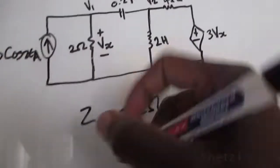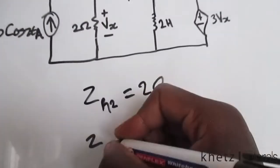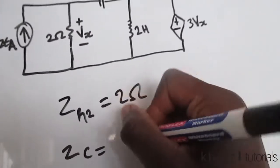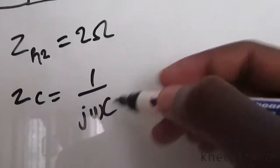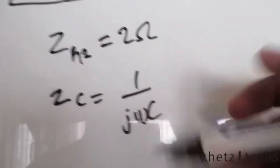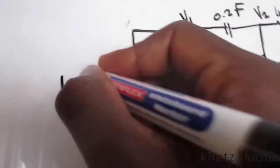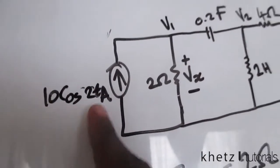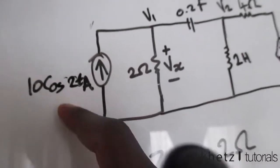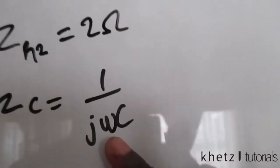Moving on to the capacitor. To find the impedance of a capacitor you use the formula 1 divided by jωC. Our ω, the angular frequency, is found from the phasor given in the circuit, which is 10cos(2t). So ω equals 2.